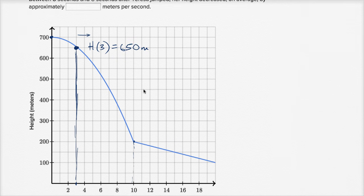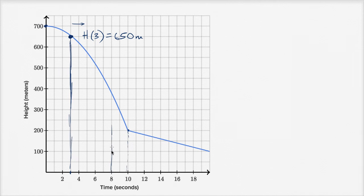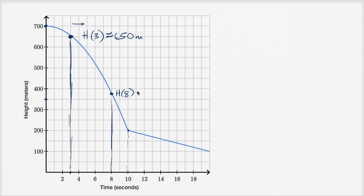And then we care about between three seconds and eight seconds. So our height at eight seconds — let's look at that. At eight seconds, this looks about halfway between 350 and 400. So I'll say her height at eight seconds — since I'm approximating, let me put a little squiggly equal sign here — her height after eight seconds looks approximately 375 meters.